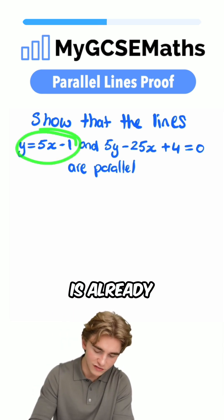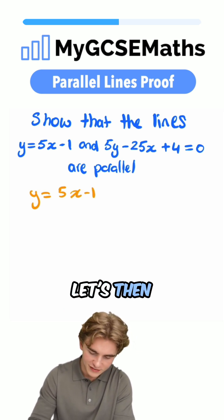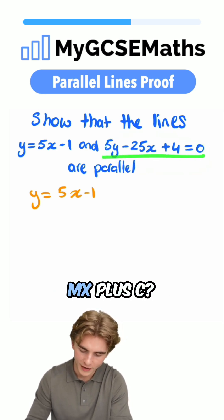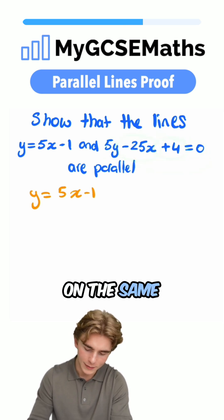We can see that this line here is already in the form y equals mx plus c, so let's copy it down. Let's then have a look at this. What's preventing this from being in the form y equals mx plus c? First of all, we have the minus 25x and the plus 4 on the same side as the 5y.